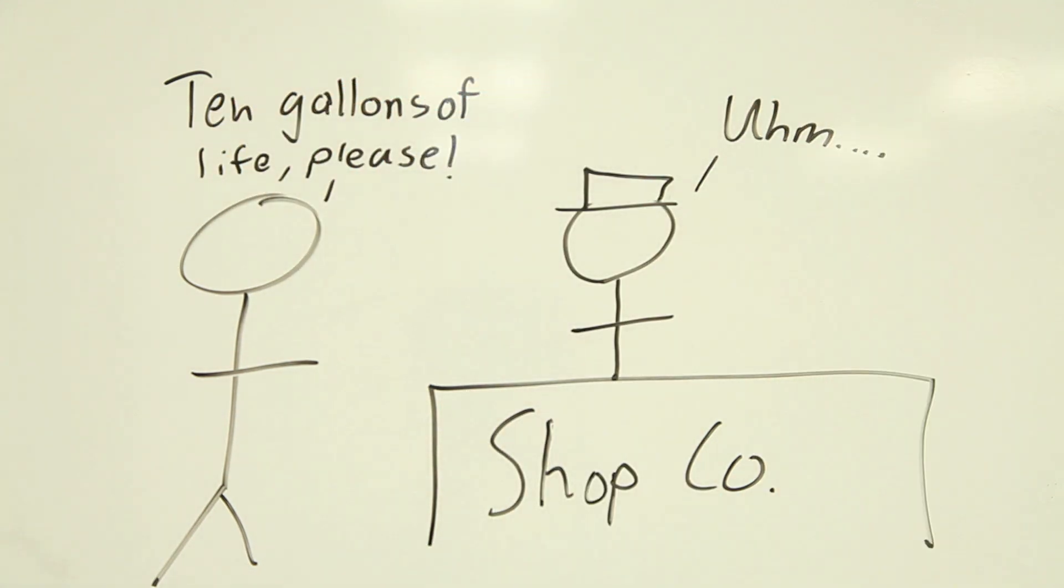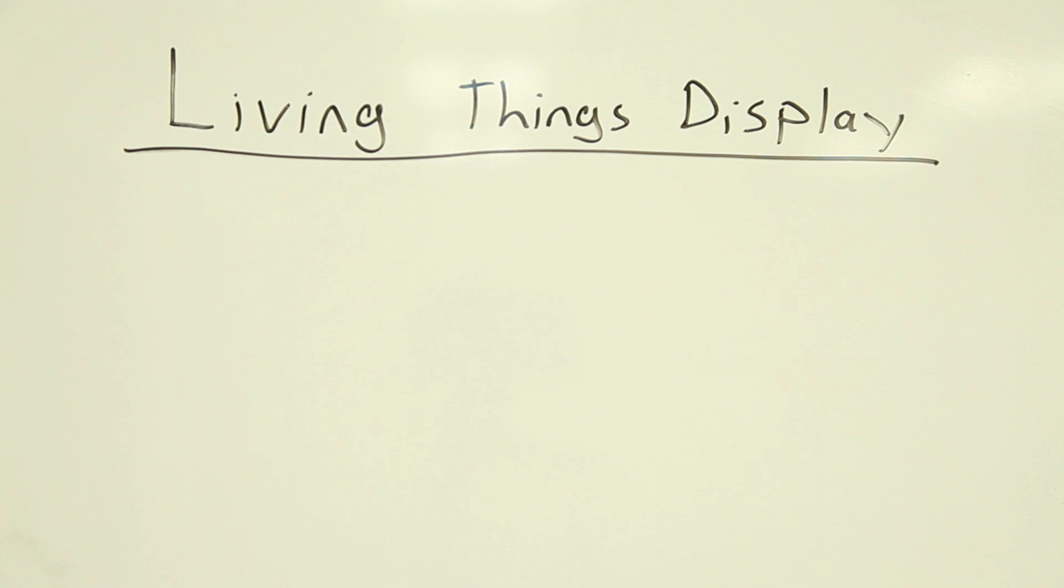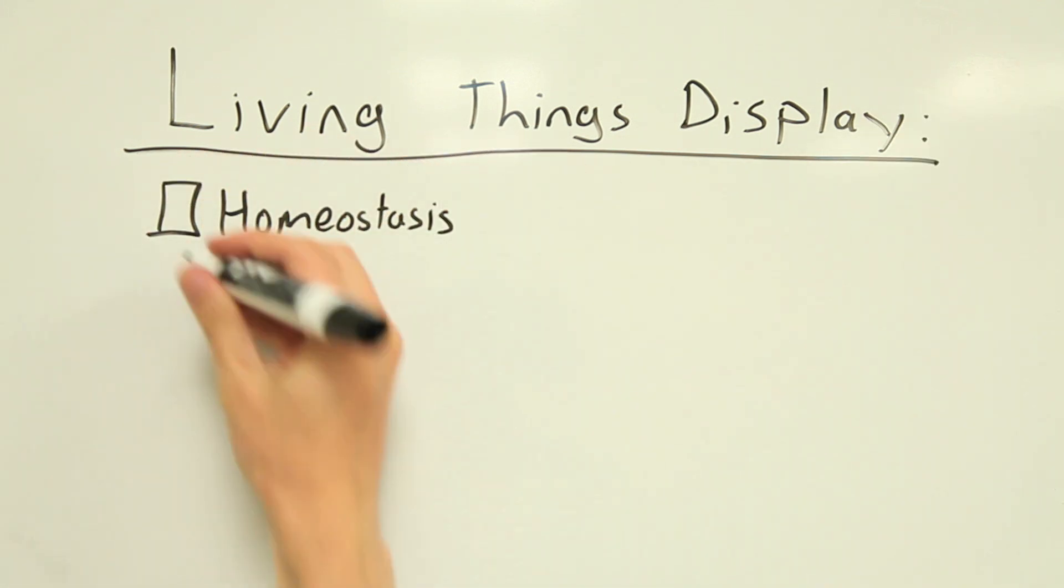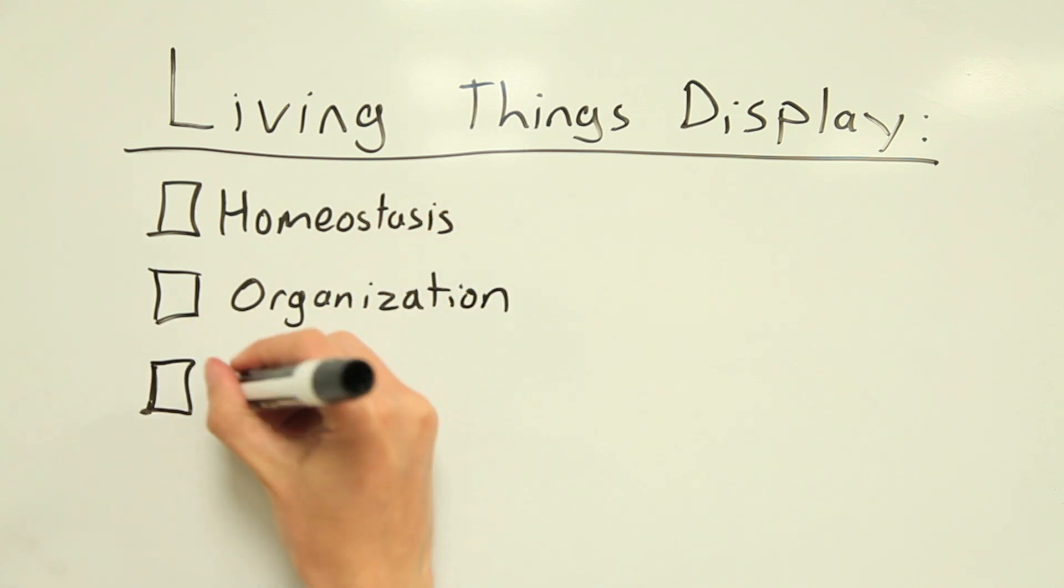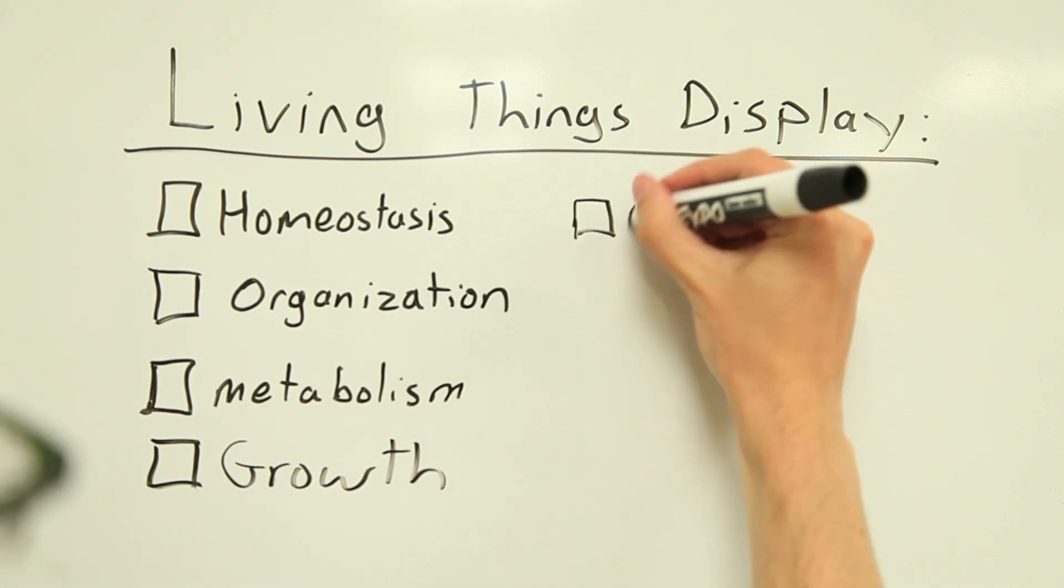A reasonable definition of life, one that you may remember from high school biology, goes something like this. Life is a characteristic of an organism that displays most or all of the following traits: homeostasis, organization, metabolism, growth, adaptation, response to stimuli, and reproduction.